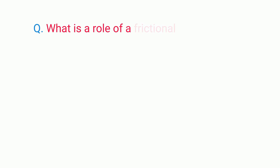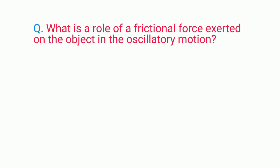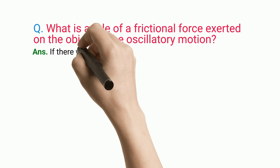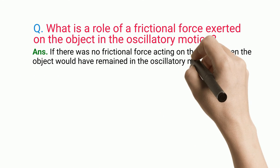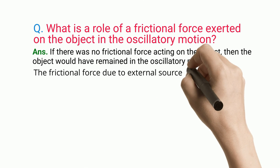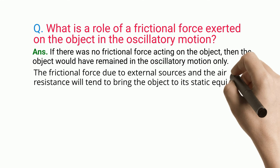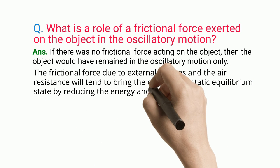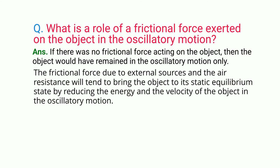What is the role of frictional force exerted on the object in oscillatory motion? If there was no frictional force acting on the object, then the object would remain in oscillatory motion only. The frictional force due to external sources and air resistance will tend to bring the object to its static equilibrium state by reducing the energy and velocity of the object in oscillatory motion.